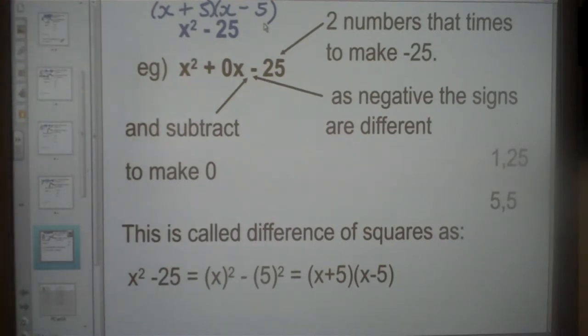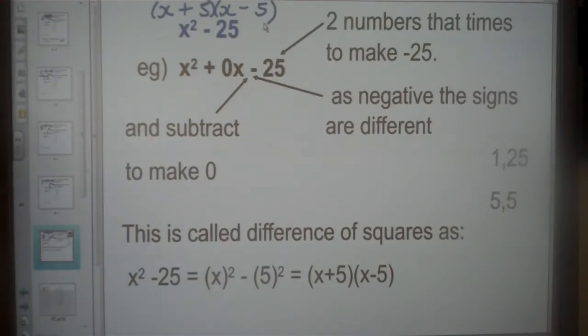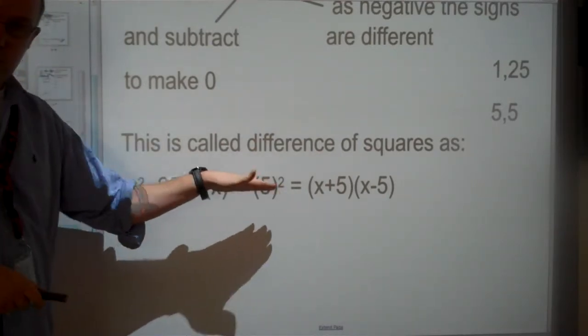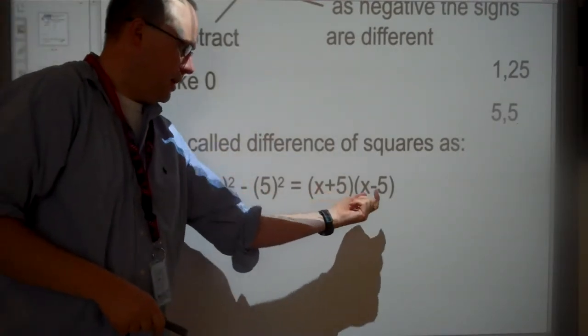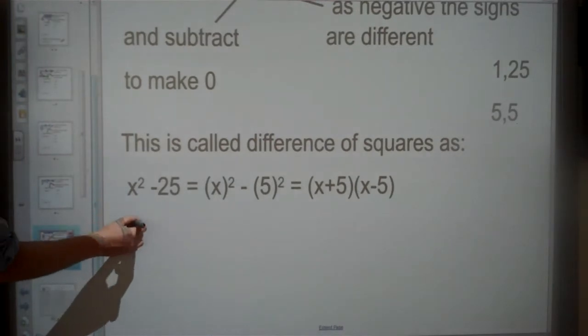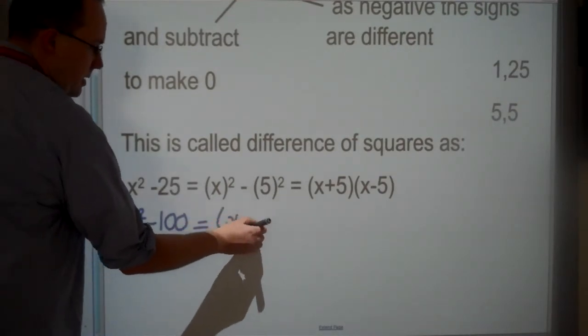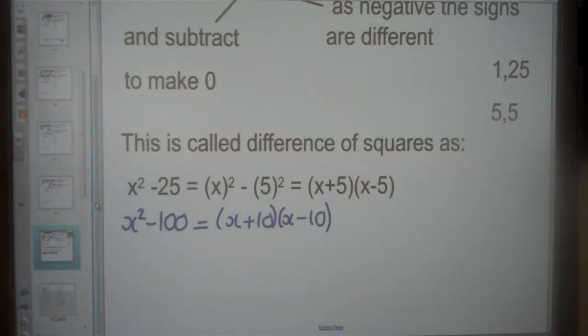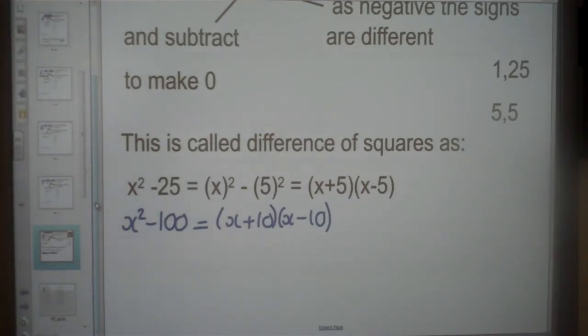For this question, this one's called difference of squares, because x² is a perfect square, but also 25 is as well, because you can write that as 5². If you notice that at the start, you can use this shortcut straight away. As soon as you've figured out what the two things are that you have to square, you take those two things, put one with a plus and one with a minus. If I asked you x² - 100, as long as you recognize this as 10, you could say x + 10, x - 10. That one's worth remembering because that's a very quick way of writing down that answer.